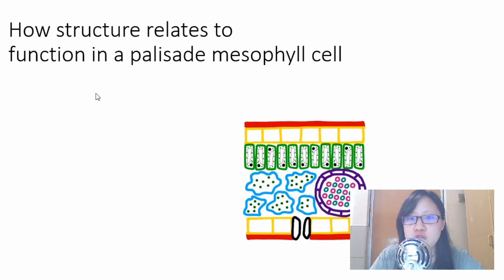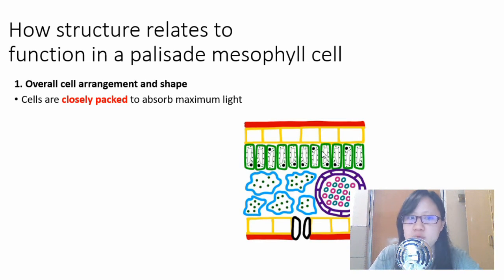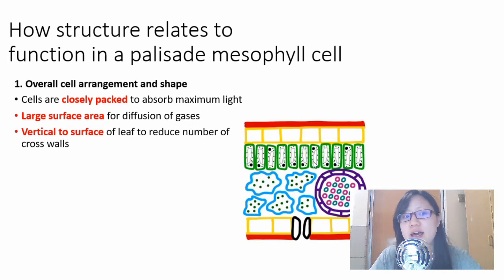Let's go into how structure relates to function in a palisade mesophyll cell. There are two major factors: cell arrangement and shape, and positioning of chloroplasts. Palisade mesophyll cells are arranged at the upper region of the leaf. They are closely packed to absorb maximum light, have large surface area for diffusion of gases, and are vertical to the surface to reduce the number of cross walls. This is all to maximize the light absorbed.